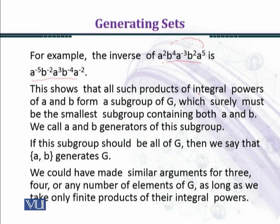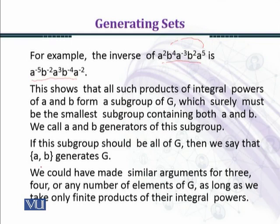This shows that all such products of integral powers of a and b form a subgroup of G, which surely must be the smallest subgroup containing both a and b. We call a and b generators of this subgroup. جتنے بھی elements a اور b کے product کی form میں آئیں گے، ان کے inverses بھی a اور b کے product کی form میں آئیں گے، اس طرح سے group دو elements a اور b سے generate ہو جائے گا۔ If this subgroup is all of G, then we say that {a, b} generates the group G.